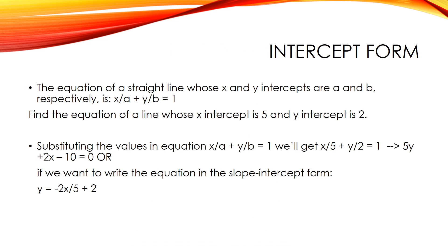The equation of a straight line whose X and Y intercepts are A and B respectively is: X/A + Y/B = 1.